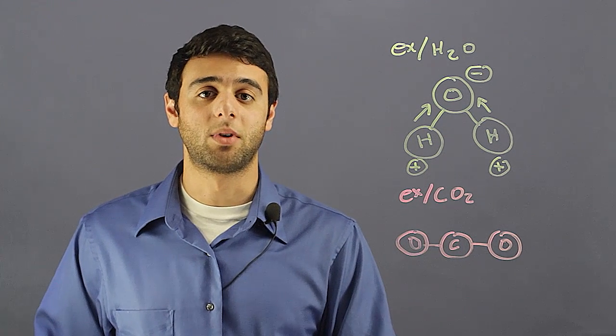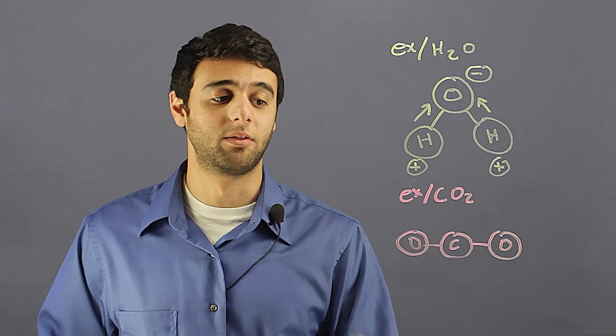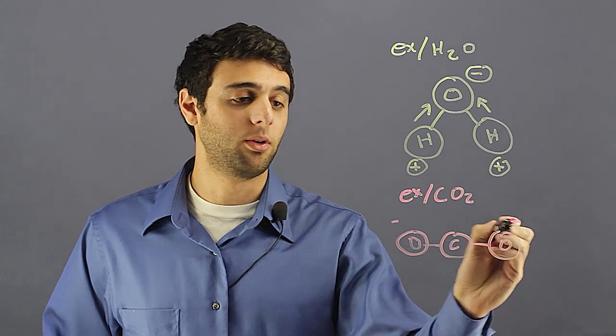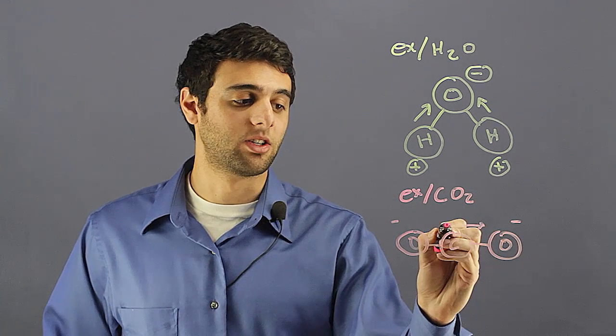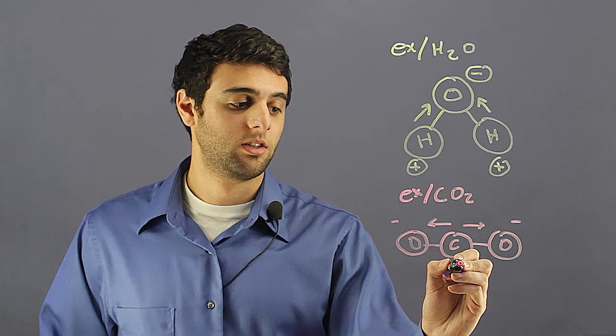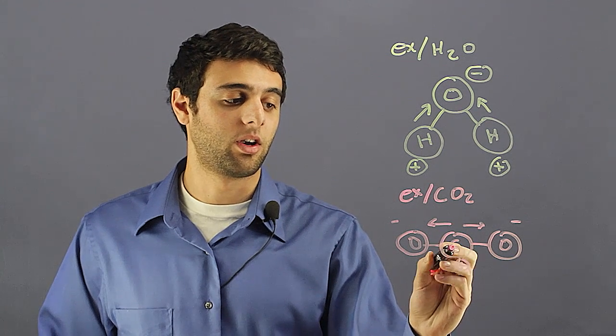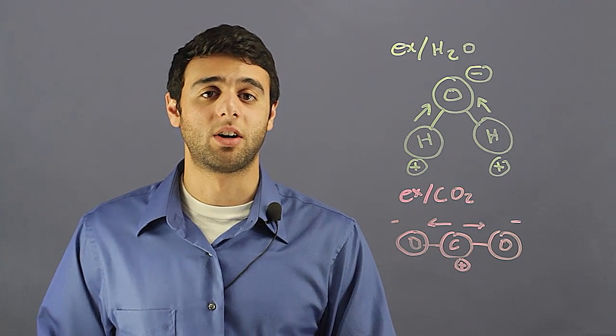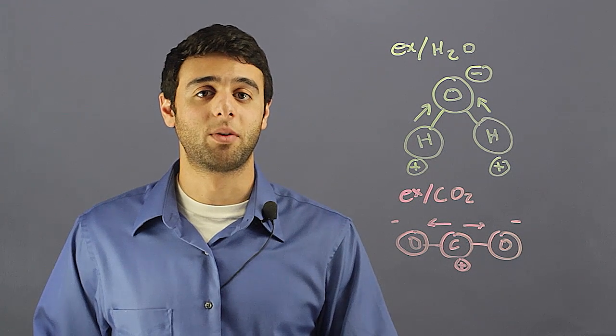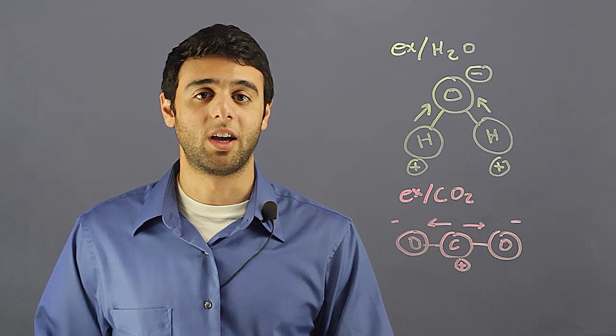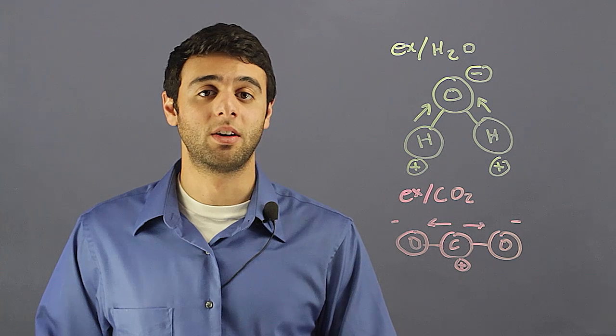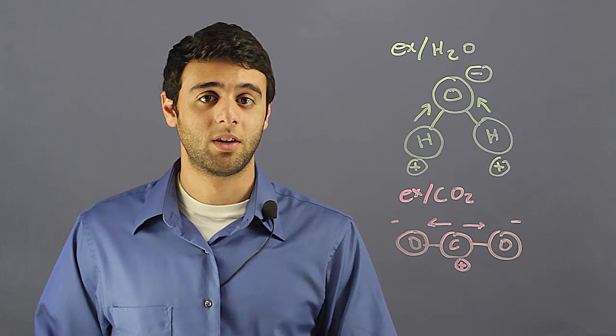Although these oxygen molecules are very electronegative, they are both pulling in opposite directions. So although the carbon is losing electrons, the overall shape of the molecule makes it so the electrons are evenly distributed all the way across.